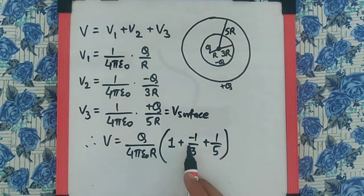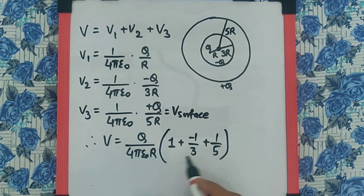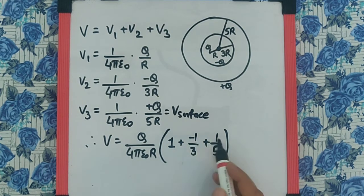Now, we can clearly say it's 1 minus 1 by 3, which is 2 by 3. Now, 2 by 3, 2, 5 is 10, and 3, 1 is 3. The addition will give us 13 upon 15.